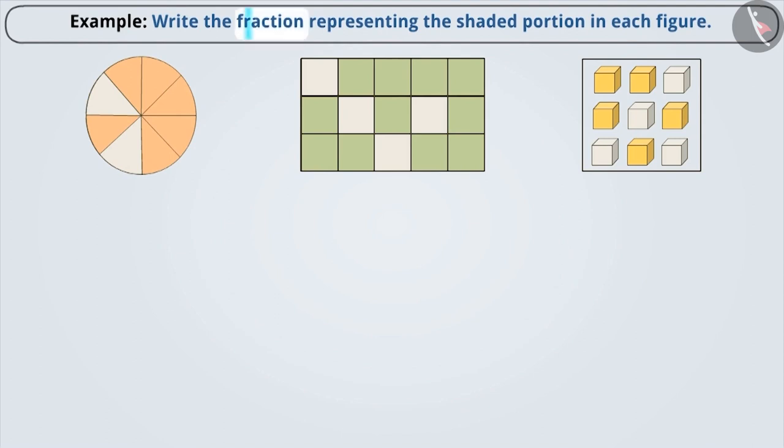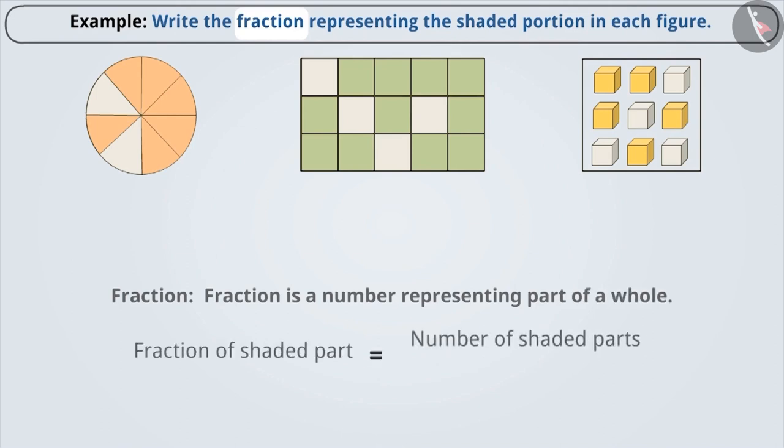In this example, fractions are represented as shaded parts. Let's identify them. You already know that fraction is a number representing part over whole. Therefore, the fraction of shaded part is number of shaded parts by the total number of parts.